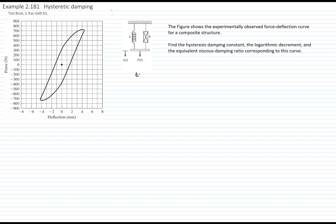First, let's look at the loop. We know that the area enclosed within the hysteretic loop is the energy dissipated. This is this area right here, and we will get an approximation of that area by counting the squares that are enclosed.